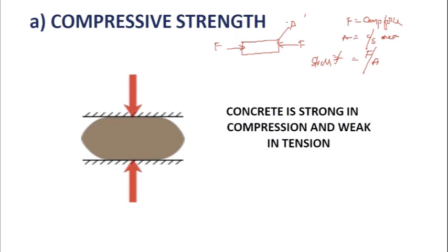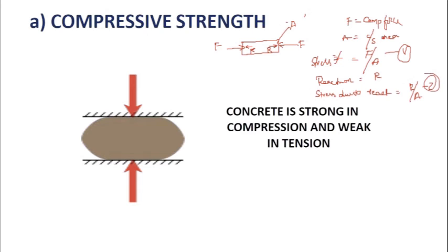When a compressive force F is acting on the body, there is a reaction developed by the body onto the externally applied force, called reaction R. Because of this reaction, stress develops, which equals R divided by A. So F/A is the stress due to externally applied load, and R/A is the resisting stress acting on the body.